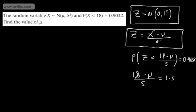We've got a basic equation, and we just need to solve for μ. Multiplying both sides by 5, 18 minus μ is going to be equal to 6.5. Adding μ to both sides, subtracting 6.5, 11.5 will be equal to μ, and we found that value.